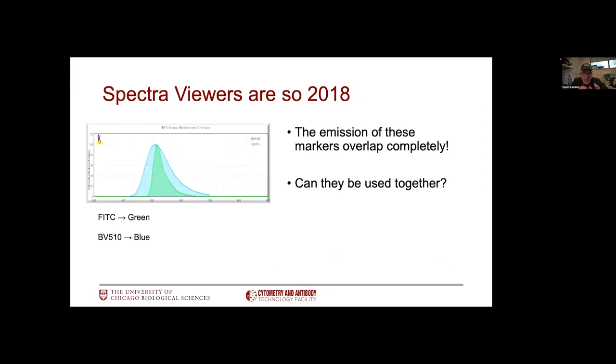Last point. For several years, we talked about spectral viewers as a way to predict the level of spectral overlap as you design your panel. If you use them, you might have noticed they are not always completely accurate. We have an example where FITC is the green line, the blue line is my BV421, and from the looks of it, they are right on top of each other and should not be used together. If you've done a bit of flow, you know FITC and BV421 works quite well. So what's going on here? Essentially, we're not getting the full information from the spectral viewers.